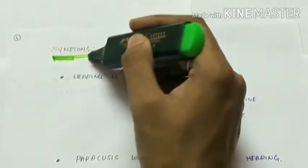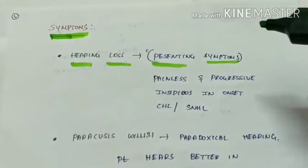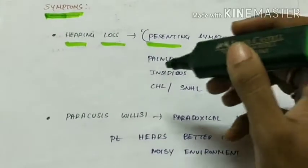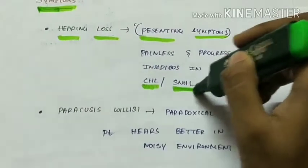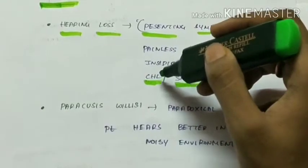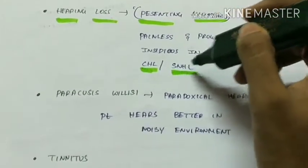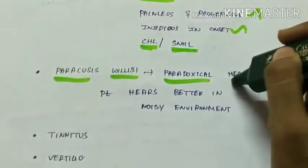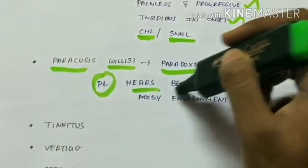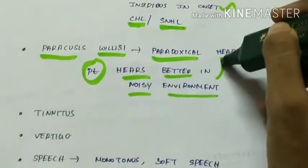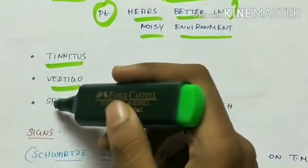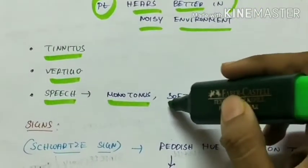The main symptom of otosclerosis is hearing loss, which is the presenting symptom. It is painless, progressive, insidious in onset, and can be either conductive hearing loss (in stapedial type) or sensorineural hearing loss (in cochlear type). Another symptom is paracusis Willisi — paradoxical hearing — where the patient hears better in a noisy environment. Other symptoms include tinnitus, vertigo, and monotonous soft speech.